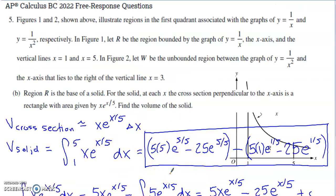Part B says that region R is the base of a solid. For the solid, at each cross-section perpendicular to the X axis, we have a rectangle with area given by XE to the X over 5. Find the volume of the solid. To find the volume of a cross-section of the solid, these cross-sections would be taken perpendicularly to the X axis. We would take the area of the face. This is very beneficial for us to have access to.